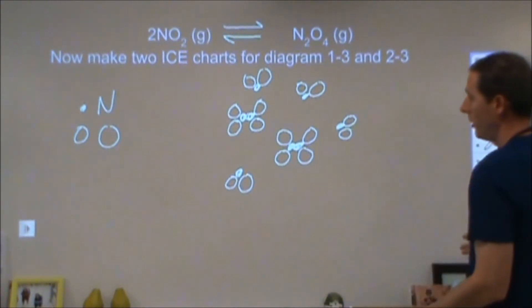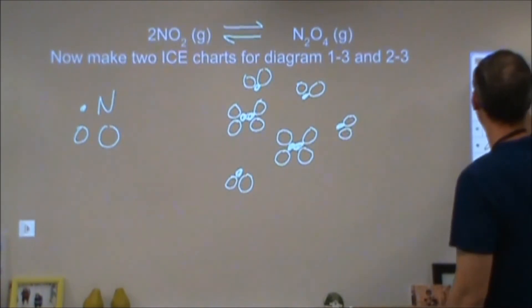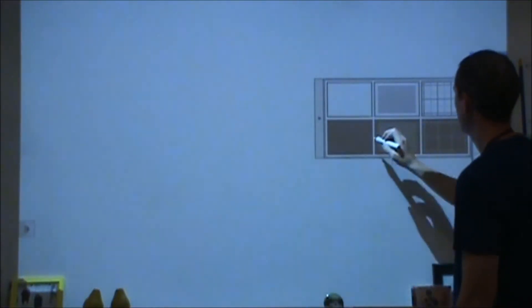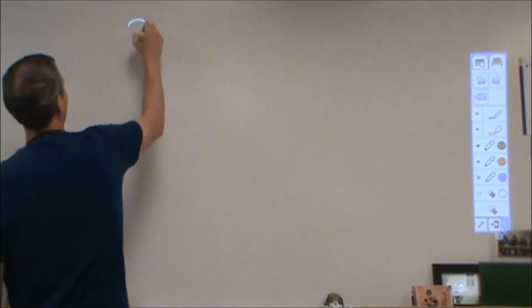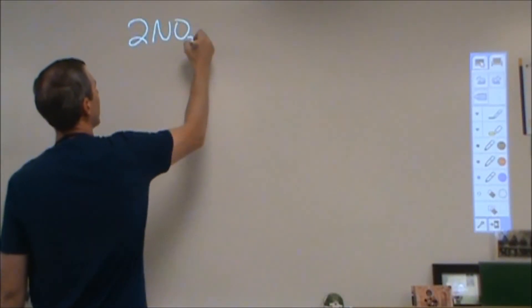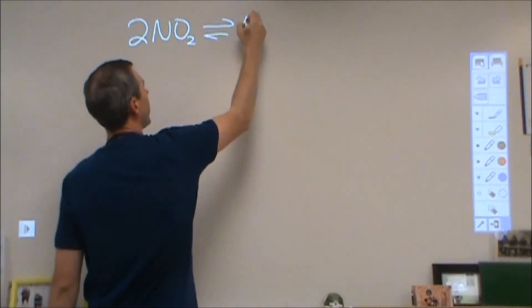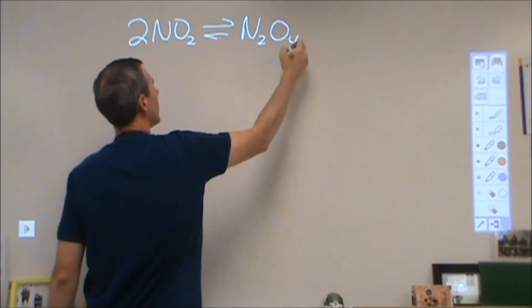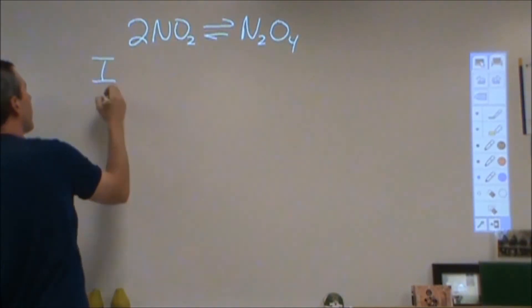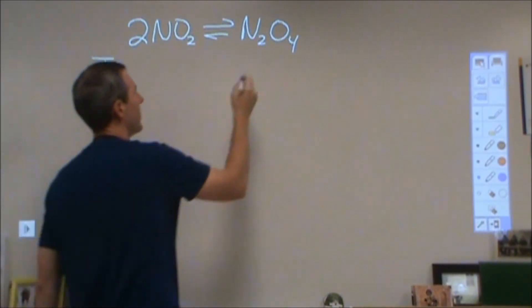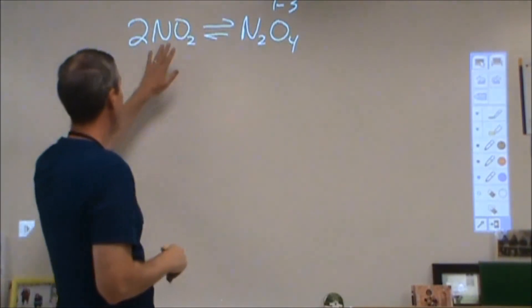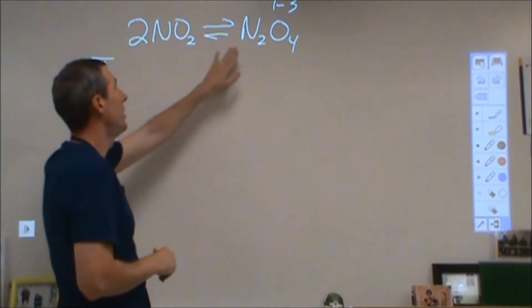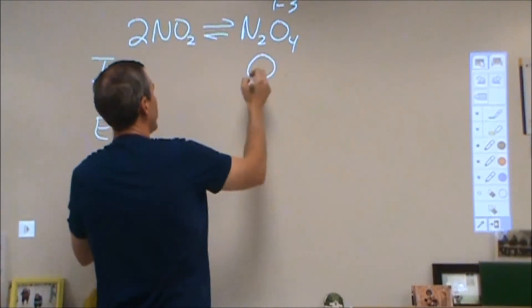Here's my equilibrium mixture. For the ICE chart, we're going to have our 2 NO2 going to make N2O4. For diagrams one to three, in diagram one, I started with all NO2 and no N2O4. I started with zero of this.